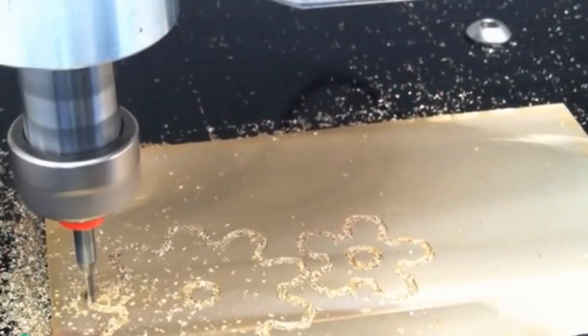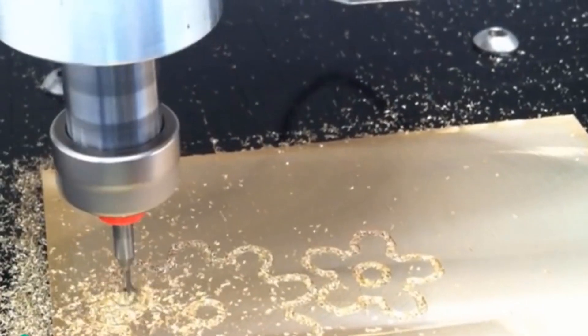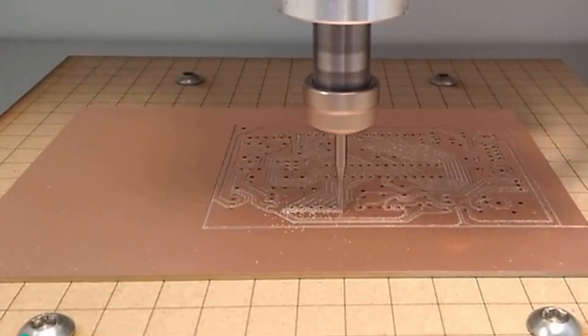With the Nomad, you'll be able to make parts out of wood, plastic, or metal. You'll be able to make accurate and functional parts that have a professional fit and finish.